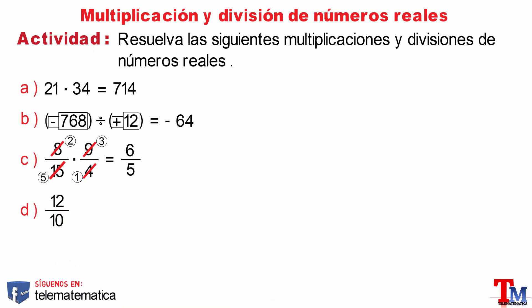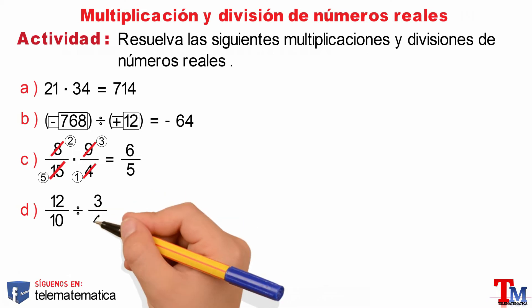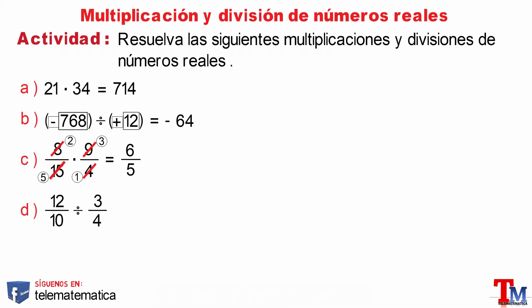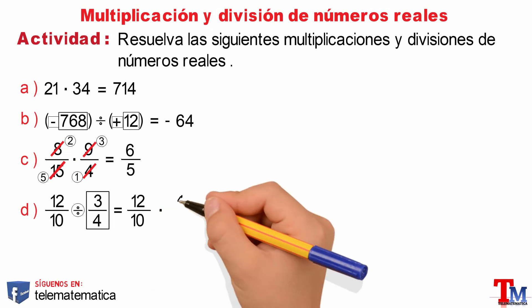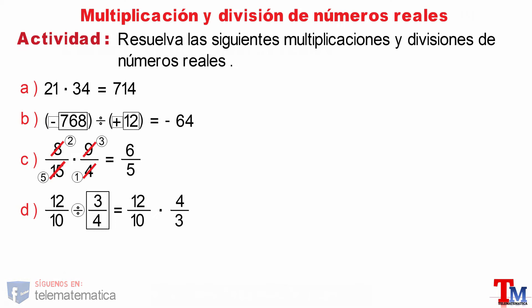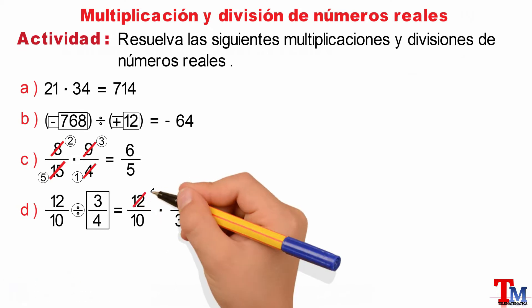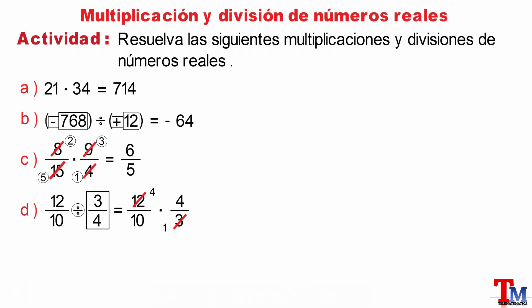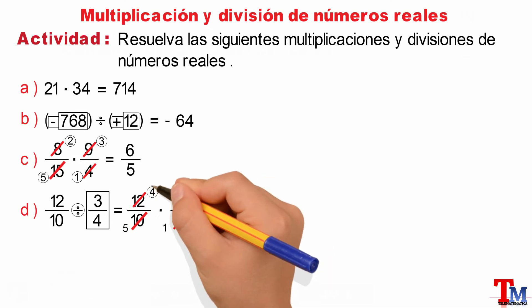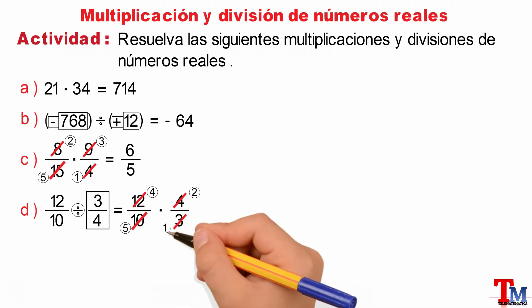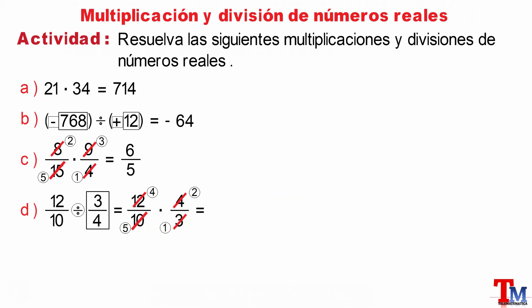Next literal: 12 tenths divided by 3 quarters. We have the division of fractions, where we will transform the division into multiplication and find the reciprocal of the second fraction. Then we would have 12 tenths multiplied by 4 thirds. We simplify everything that can be simplified, multiply numerator by numerator and denominator by denominator, and we get 8 fifteenths.